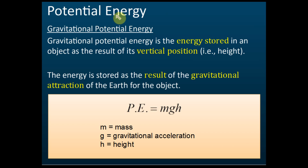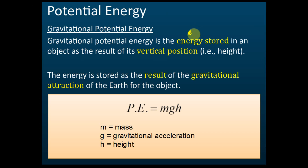Let's start with potential energy. There are two types of potential energy: gravitational potential energy and elastic potential energy. Gravitational potential energy is the energy stored in an object as the result of its vertical position or its height. For example, if you have an object here and you lift it to a higher position, potential energy will be stored inside this object.